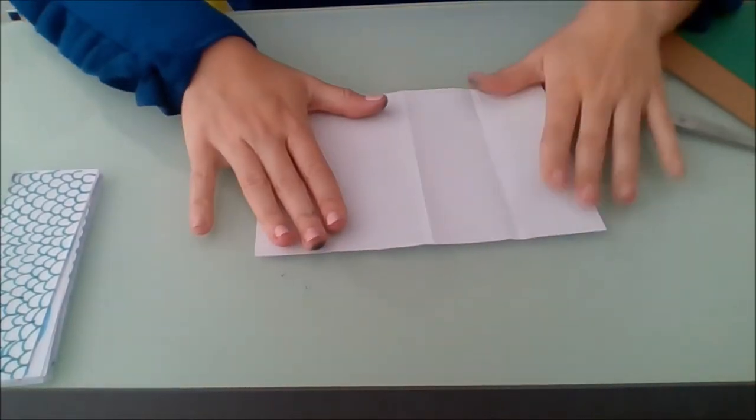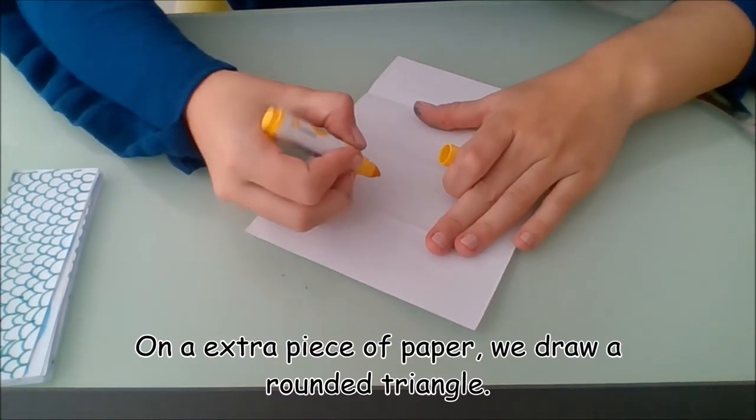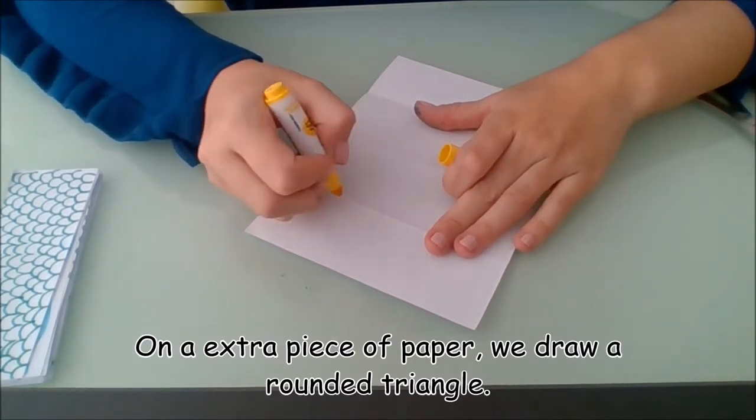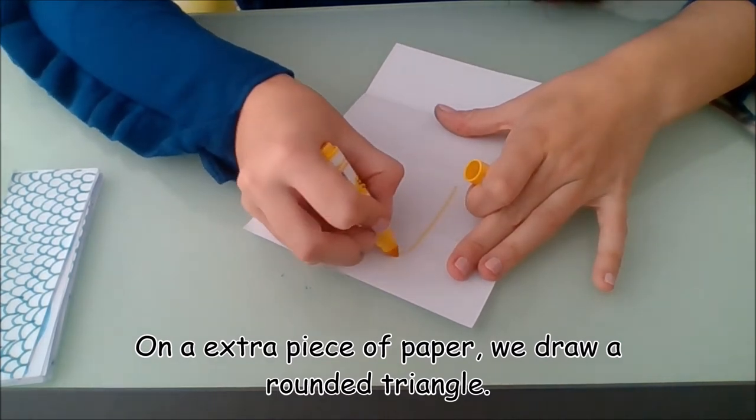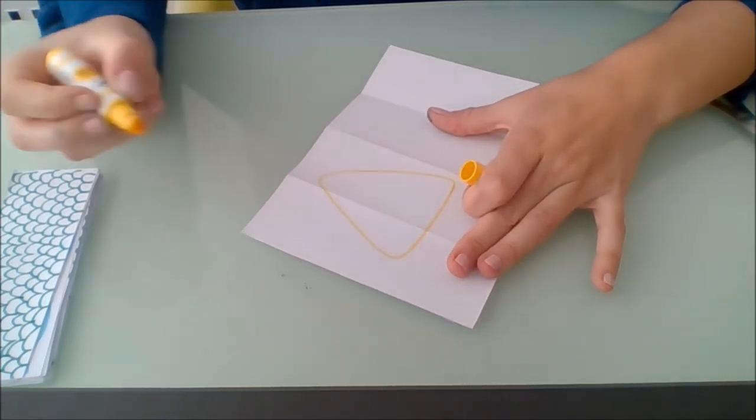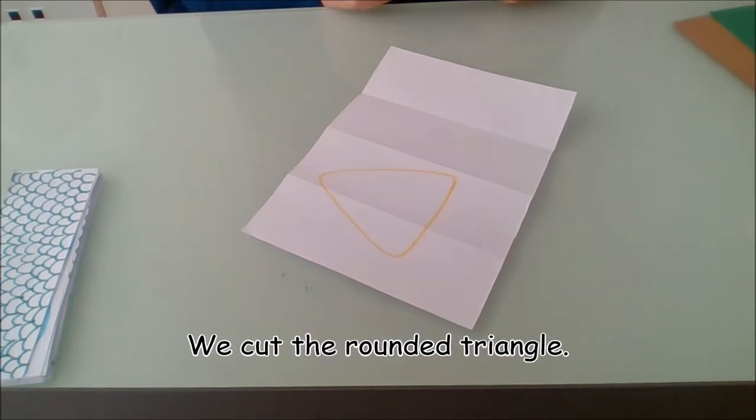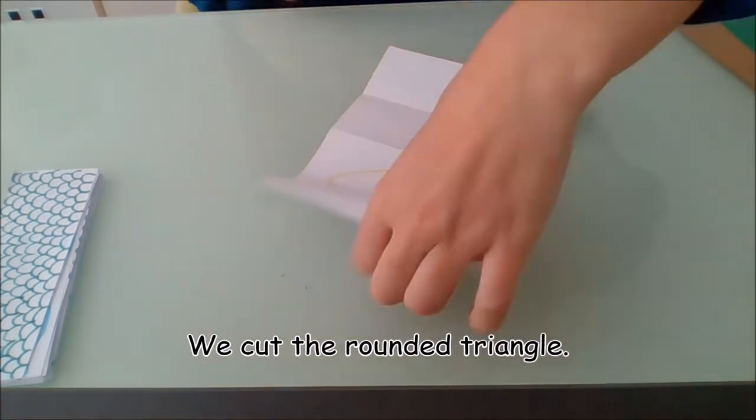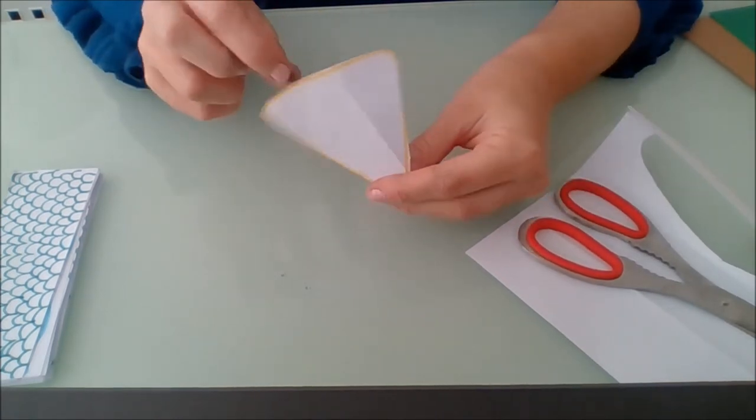Now on any extra piece of paper that you have, we need to draw the shape of a rounded triangle to make the head of our snake. So we're drawing a triangle with rounded edges, and we cut it. So this should be the final shape we have.